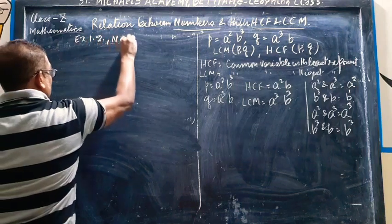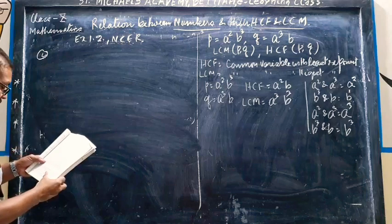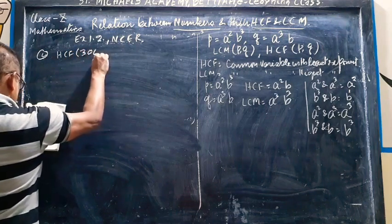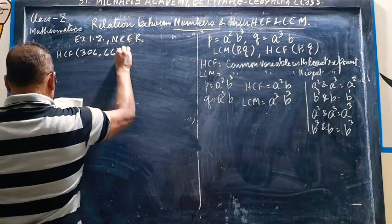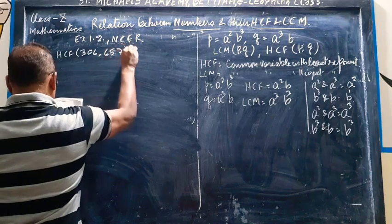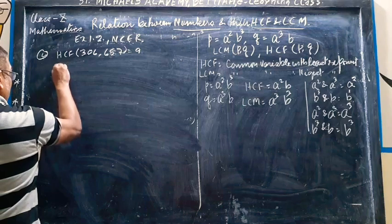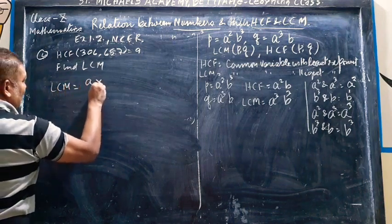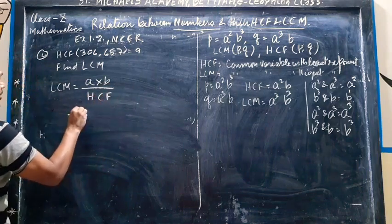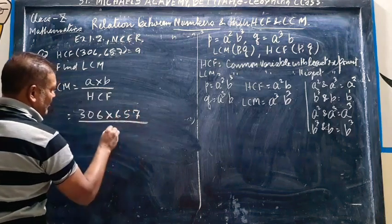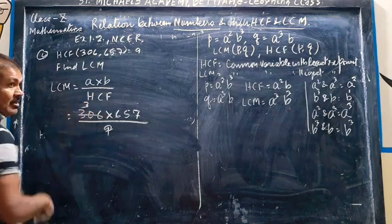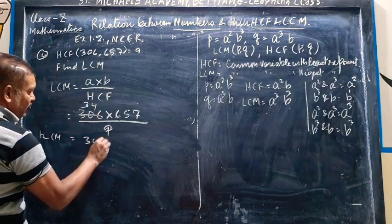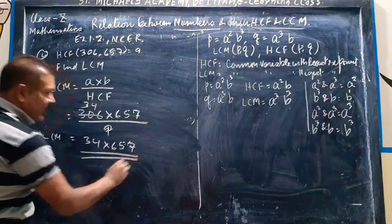Question number 4. We have given that HCF of 306 and 657 is equal to 9. We have to find LCM. Now what formula I have explained is that LCM is equal to product of the numbers divided by HCF. 306 into 657 divided by 9. So the LCM is equal to 34 into 657. We multiply and get the answer.